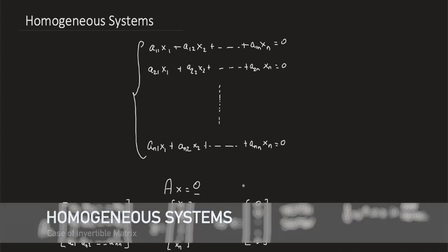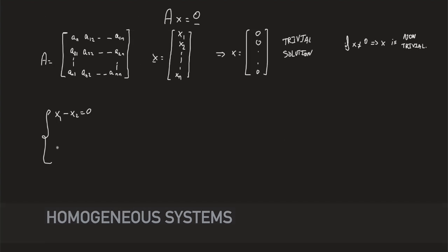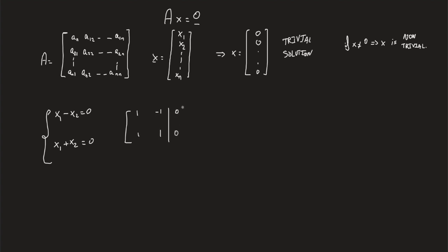For example, consider the following homogeneous system where x1 minus x2 equals zero and x1 plus x2 also equals zero. Using the augmented matrix, we can form 1, -1, 1, 1, and all zeros on the right hand in the last column.